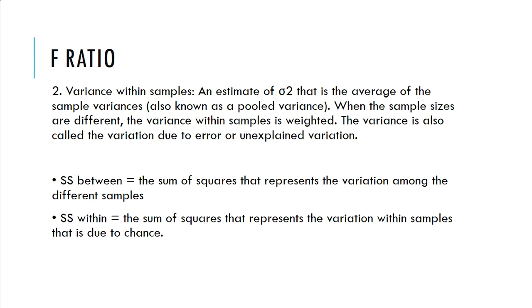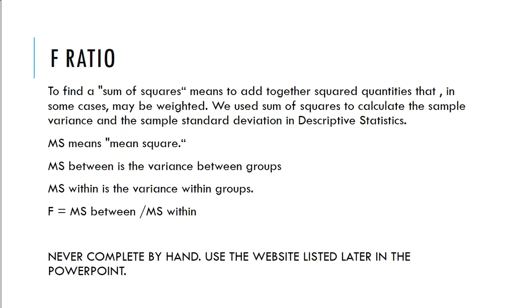So SS between is the sum of squares that represent the variation among the different samples. SS within is the sum of squares that represent the variation within the samples that is due to chance. Okay, to find the sum of squares mean, you add together the squared quantities that in some cases may be weighted. We use the sum of squares to calculate the sample variance in the sample standard deviations descriptive statistics.